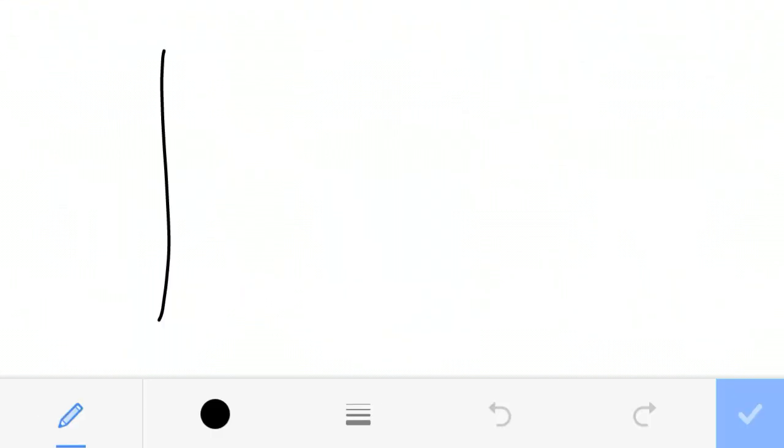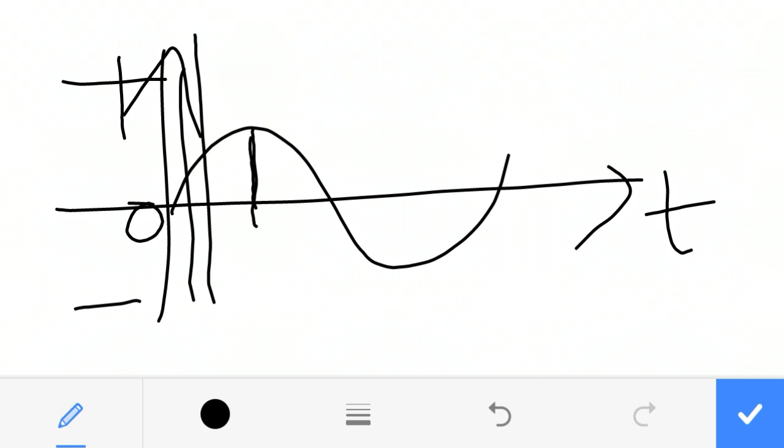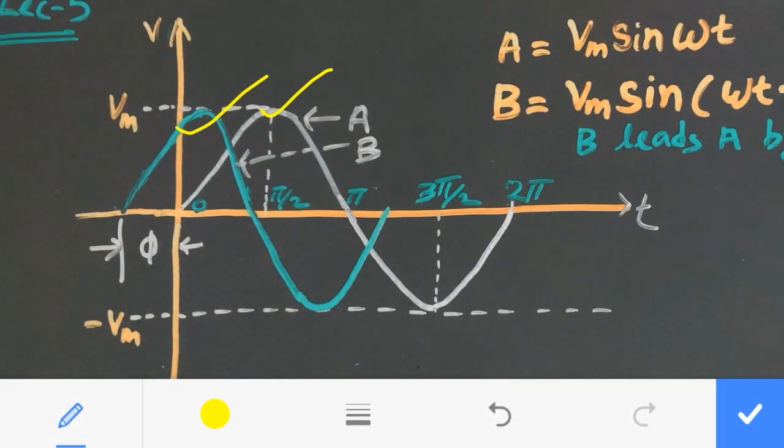The waveform, this is the maximum value. This is the positive value and this is the negative value. This is the zero axis. This x-axis is the time axis and this y-axis is the magnitude axis. Here this is the positive values and these are negative values.